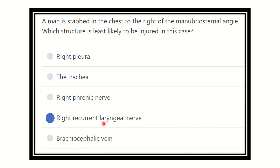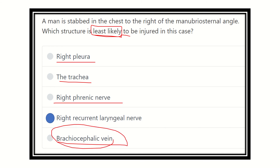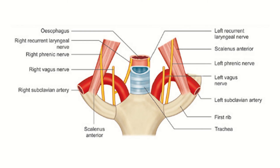Our final answer is the right recurrent laryngeal nerve. This nerve is least likely to be damaged during this procedure. On the other hand, the right pleura, trachea, right phrenic nerve, and brachiocephalic vein may all be damaged. But the right recurrent laryngeal nerve does not recess into the chest at this level, so there is no risk of injury to this nerve.